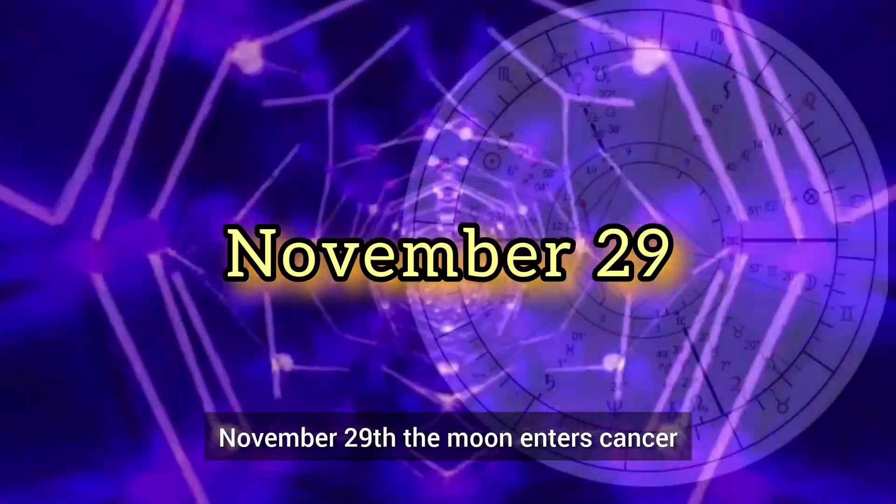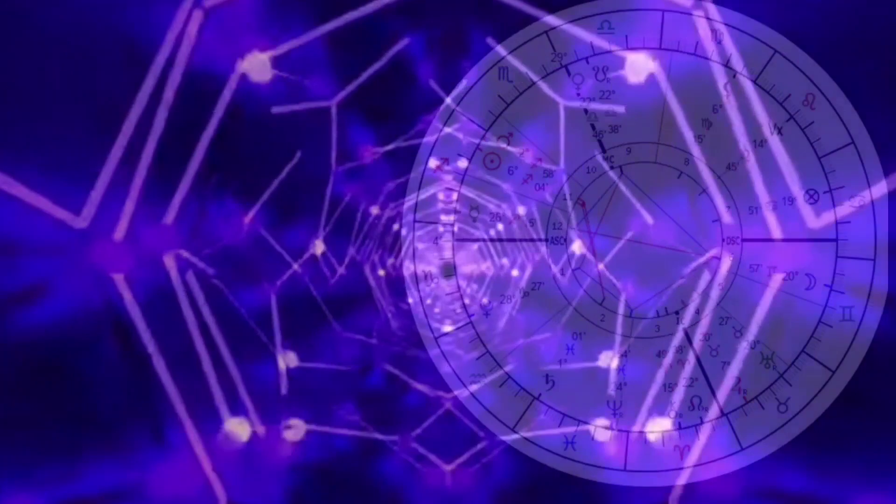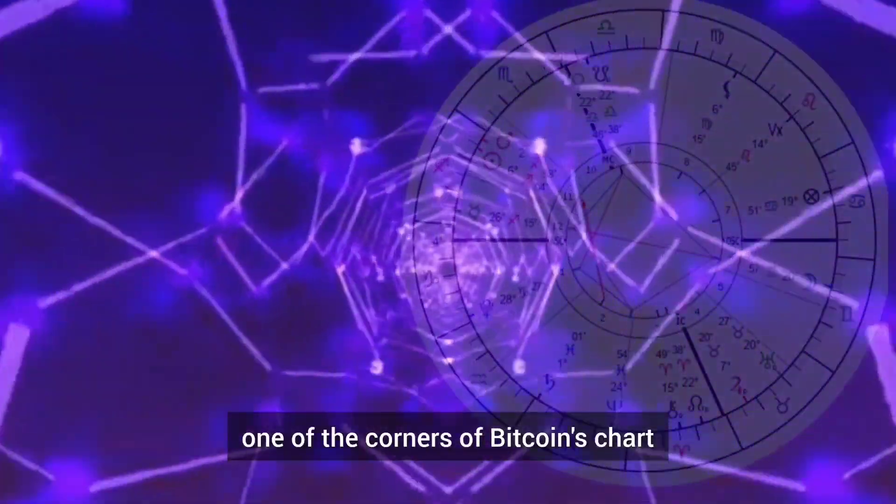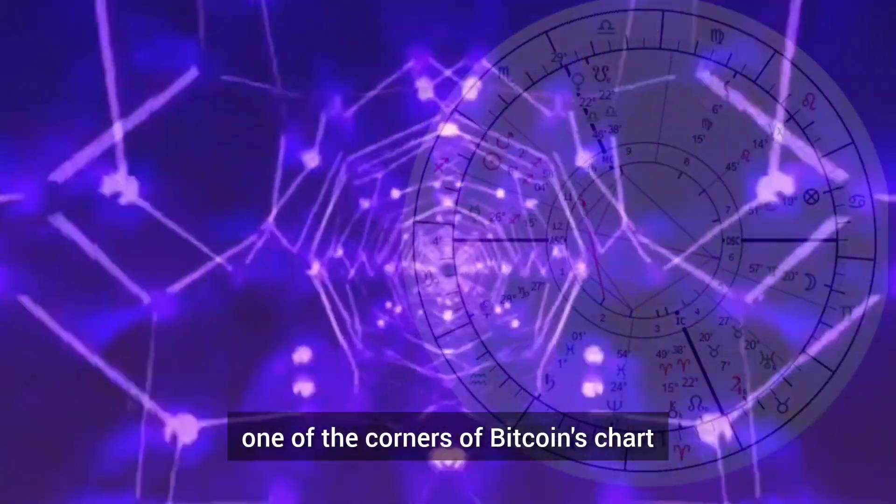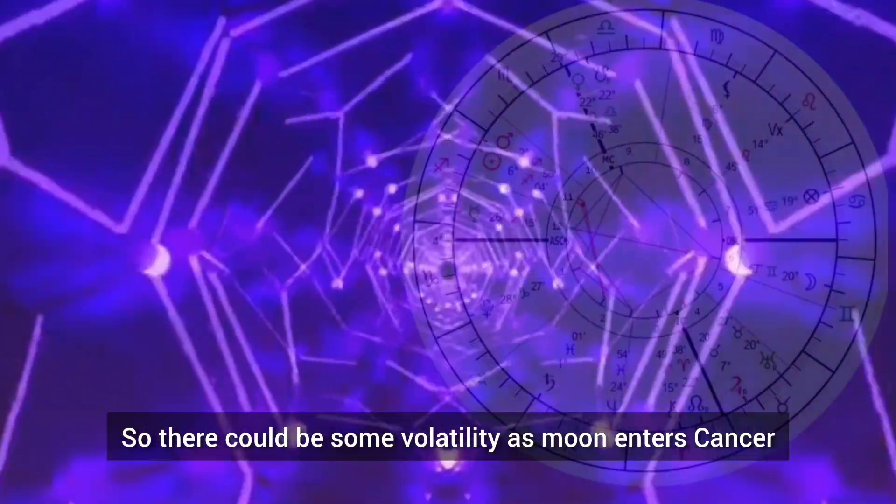November 29th, the moon enters Cancer. The moon entering its home sign, the moon likes to be in Cancer. Cancer is also one of the corners of Bitcoin's chart, so there could be some volatility as the moon enters Cancer.